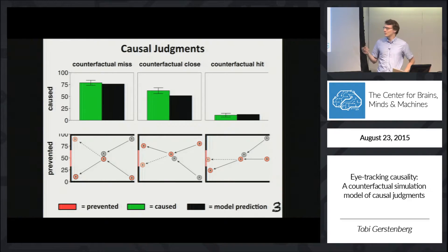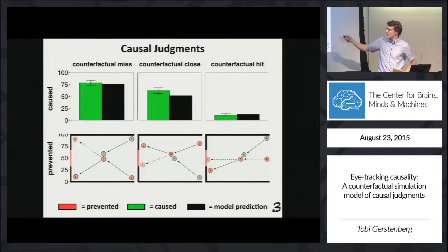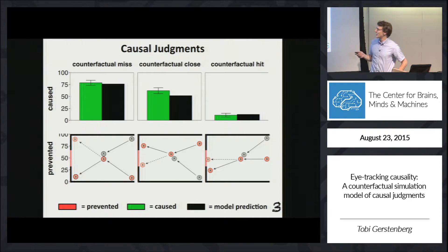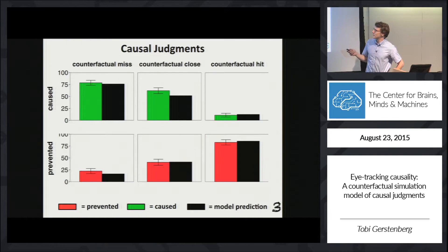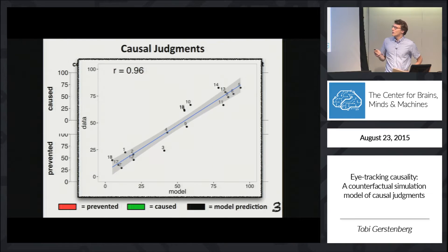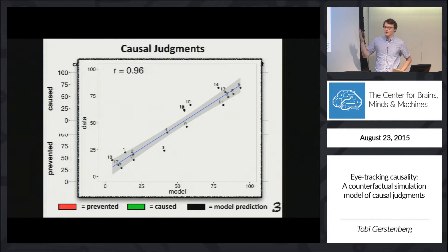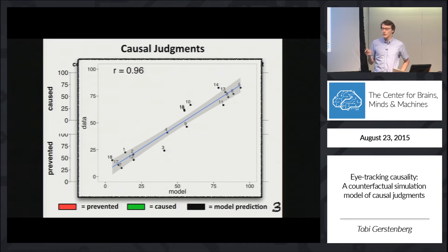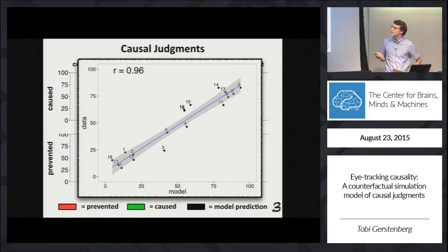The same holds for prevention: the more that A prevented B from going in — the more sure you were that B would have gone in if A hadn't been present — the higher the prevention judgments. Across 18 clips in total, we find a very, very close correspondence between counterfactual and causal judgments, with a correlation of 0.96.